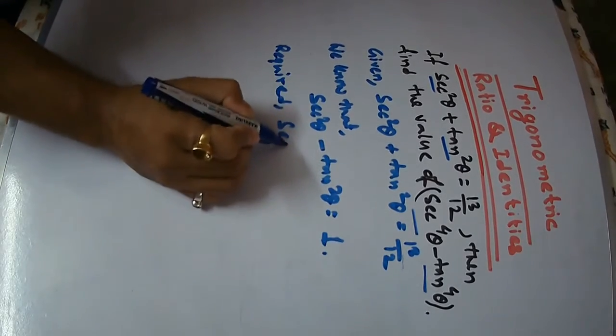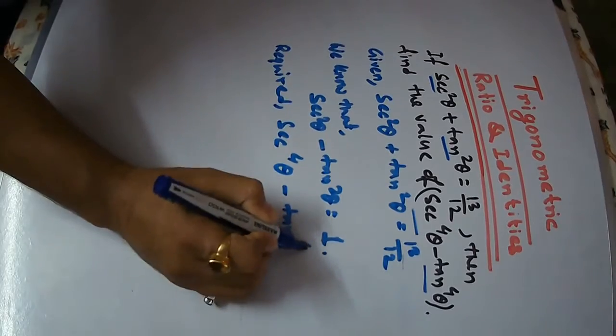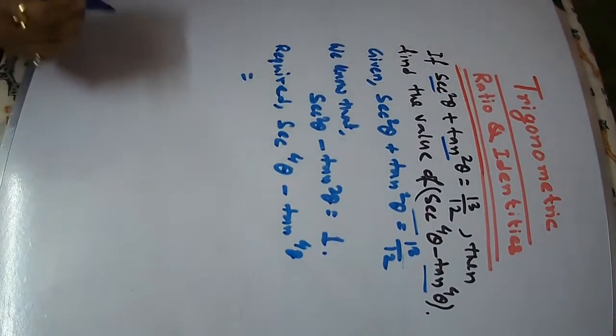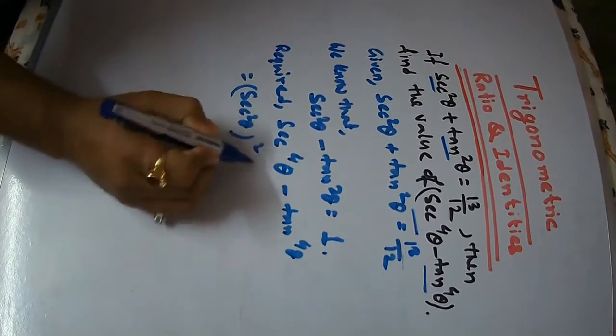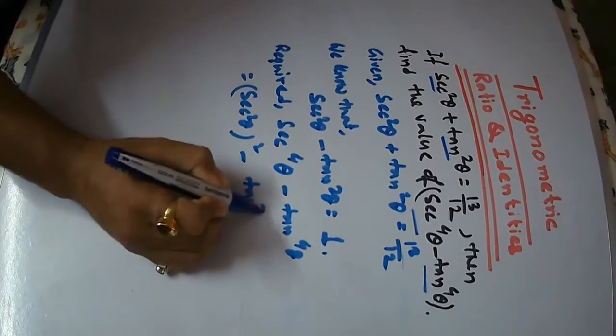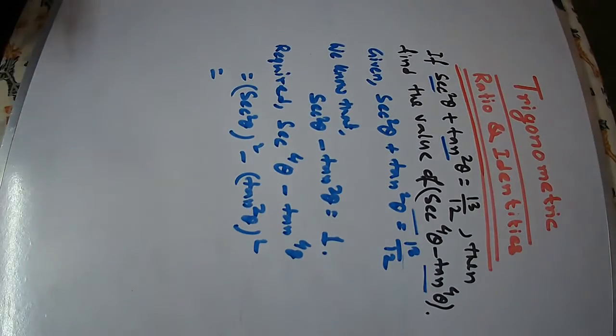Required: 6 to the power 4 theta minus 10 to the power 4 theta. I can write this as 6 square theta the whole square minus 10 square theta the whole square. This is of the form a squared minus b squared.